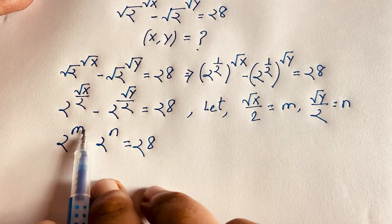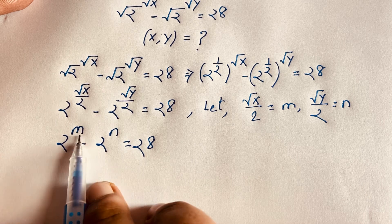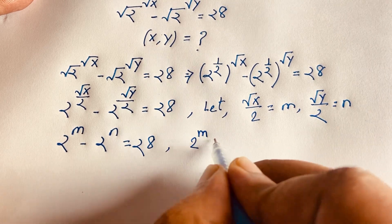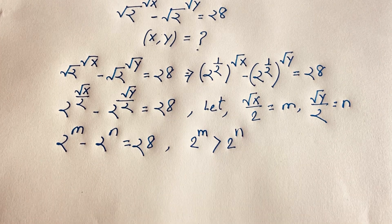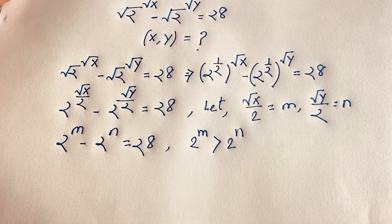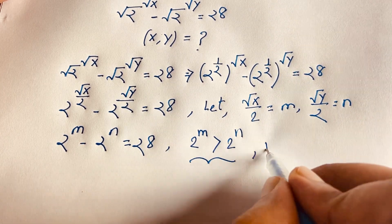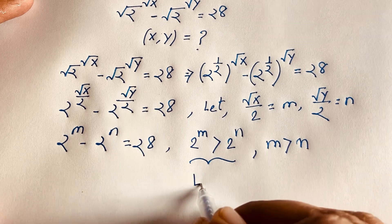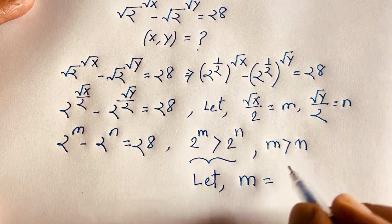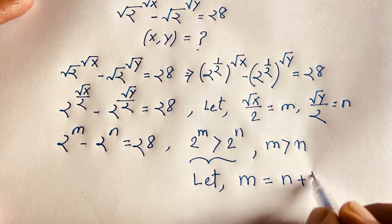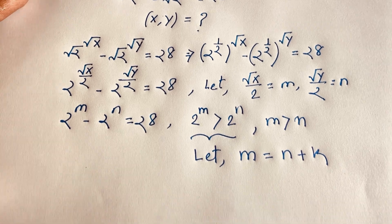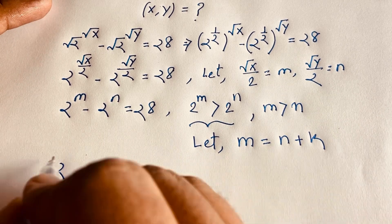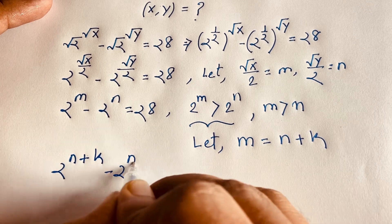Since 28 is a positive number, 2^m must be greater than 2^n, which means m is greater than n. So let m = n + k for some positive value k. Substituting, we get 2^(n+k) minus 2^n equals 28.